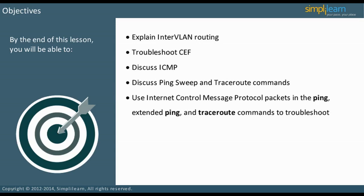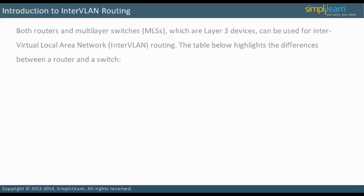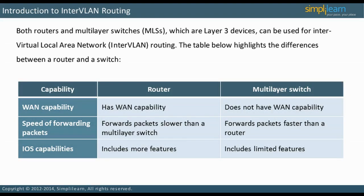Let us start our discussion of inter-VLAN routing. A layer 3 device is required for inter-VLAN routing. This means that either a router or a multi-layer switch can be used. There are differences between the two devices in terms of overall capabilities. For example, a router has a wide area network capability, whereas an MLS does not.